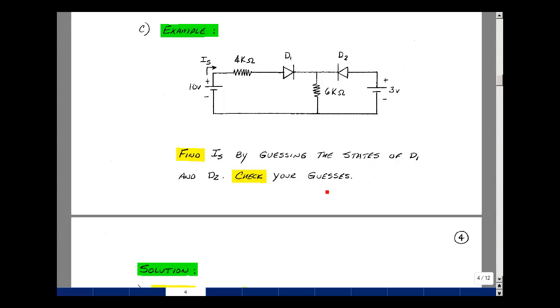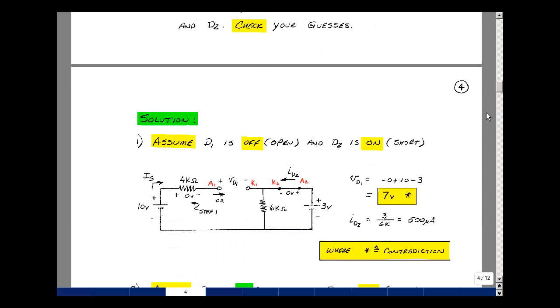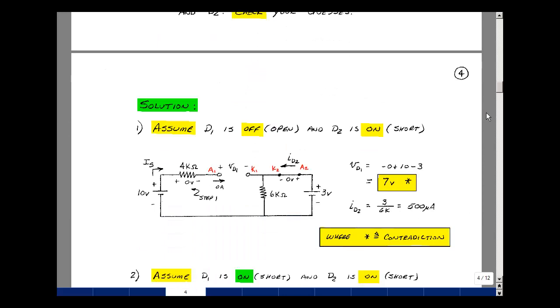Let me try by taking a wild guess and guess that D1 is off, an open circuit, and D2 is on, a short circuit. Now where's the anode and cathode of 1? It was here and here, and the anode and cathode of 2. If I'm assuming it's an open circuit, I'm going to solve for the voltage from anode to cathode, and if I'm assuming it's a short circuit, I'll solve for the current from anode to cathode. See whether these guesses were correct or not, and if they are, we'll then solve for I sub s.